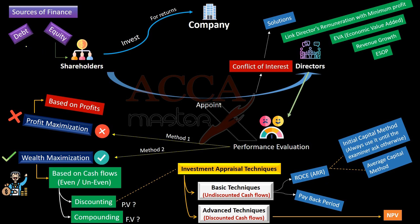We have two major sources of finance. First is debt and the second is equity. The main source of getting debt is a bank, while the main source of getting equity is shareholders of the company who invest into the company for the sake of returns. These shareholders cannot involve themselves in the day-to-day management of the company, so they appoint directors.